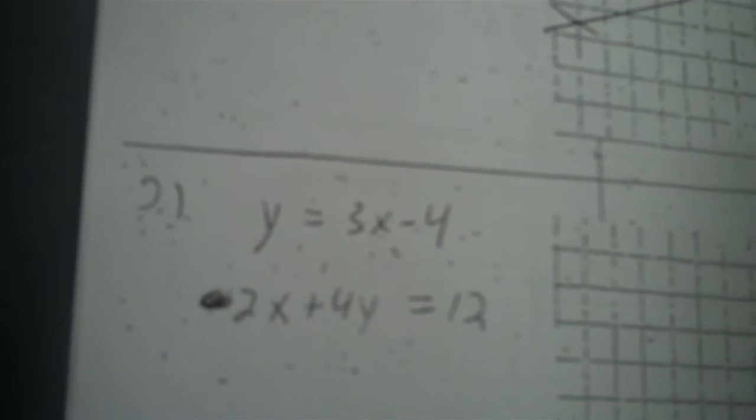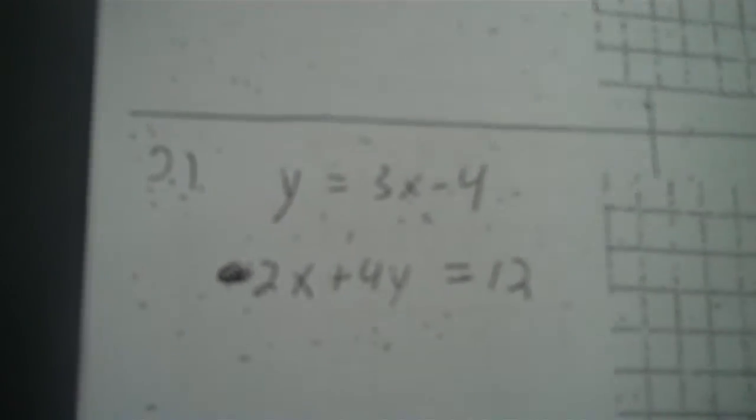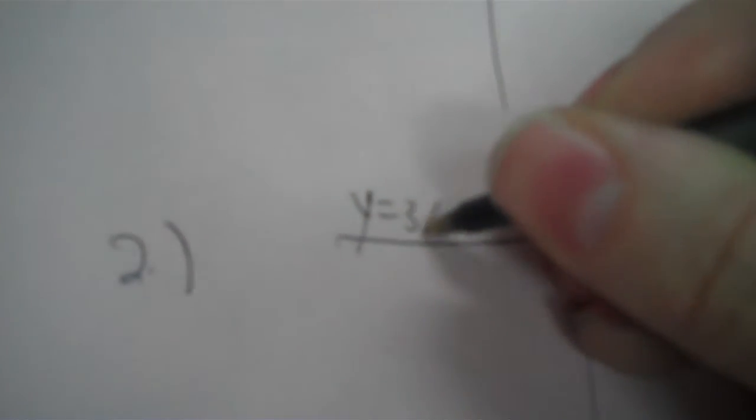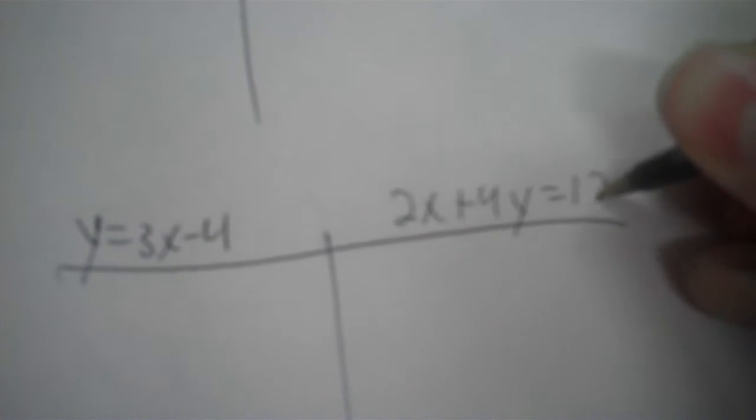Number 2: y equals 3x minus 4, and 2x plus 4y equals 12. So for y equals 3x minus 4, we have m and b. Slope is 3, y-intercept is negative 4. Count 1, 2, 3, 4. Remember it's 3 over 1, so you go up 3, forward 1.